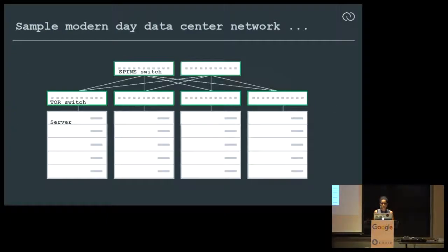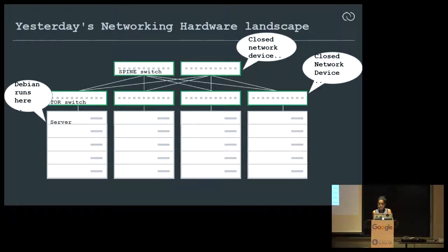I'm not sure how many people know about open networking, so I put this slide up to give some context. This is a sample modern-day data center network topology — a spine-leaf topology. Basically you have racks of servers, TOR switches, and spine switches on top. When I talk about closed network devices, I'm talking about the TORs and spine switches — always the Cisco's and Arista's closed box switches and routers which can do terabits of packets in hardware, with specialized switch ASICs.